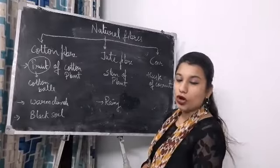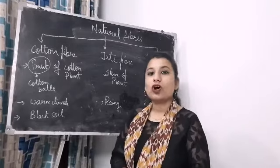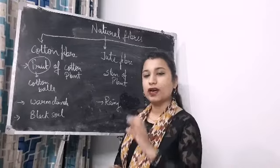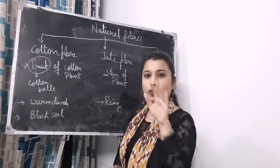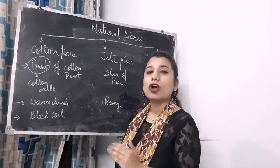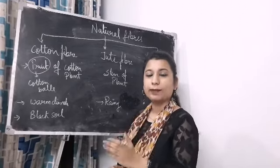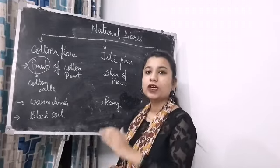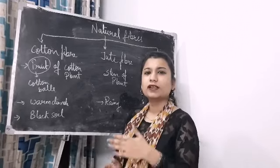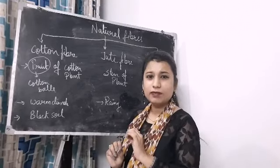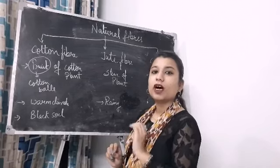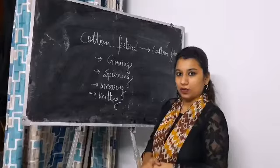Now let's talk about coir. Coir is the fiber that we get from the husk of coconut. You might have seen the brown part over the surface of the coconut — that is the coir. Many bed mattresses have coir inside them. So coir is the material we get from the husk of the coconut.